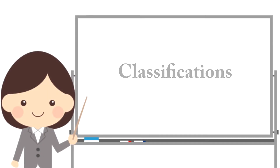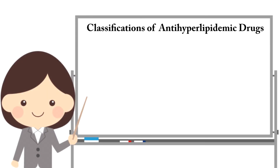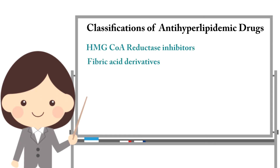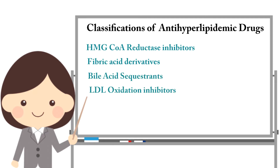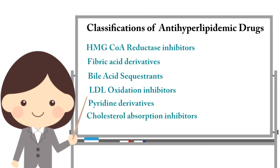Classification of anti-hyperlipidemic agents: HMG-CoA Reductase Inhibitors, Fibric Acid Derivatives, Bile Acid Sequestrants, LDL Oxidation Inhibitors, Pyridine Derivatives, Cholesterol Absorption Inhibitors, and Miscellaneous Agents.